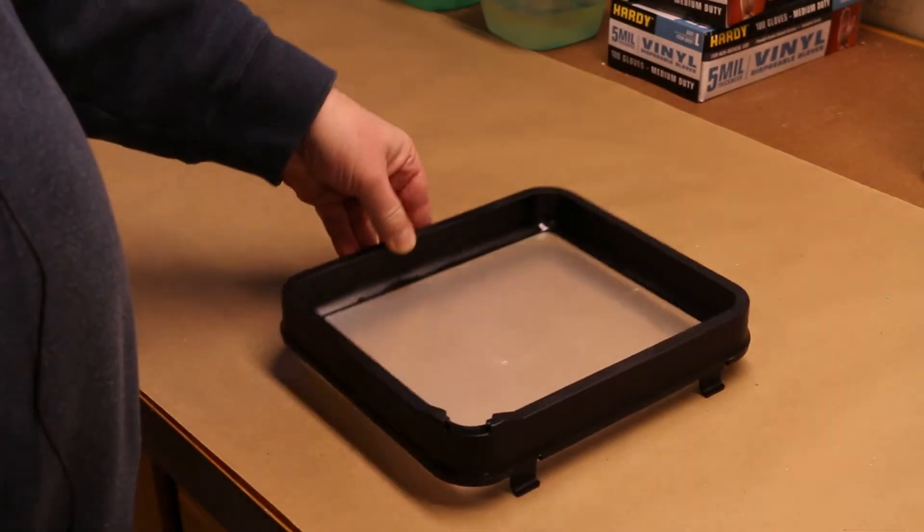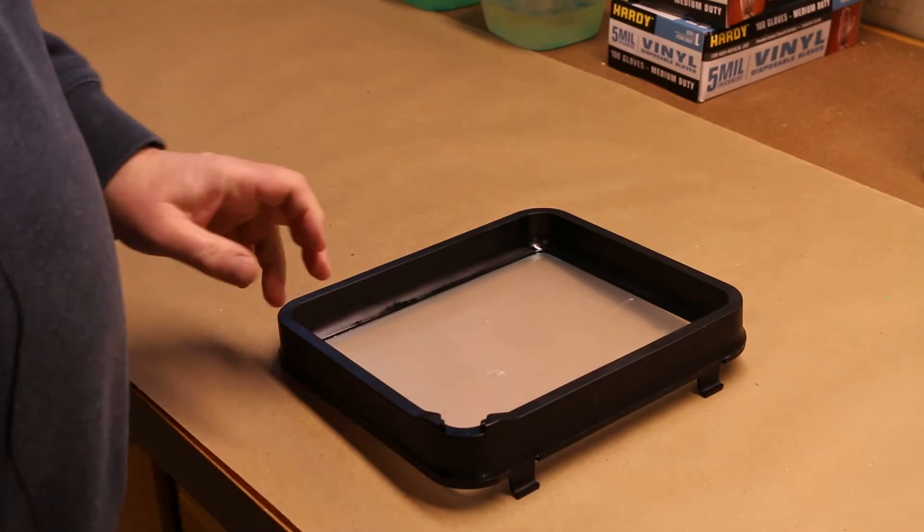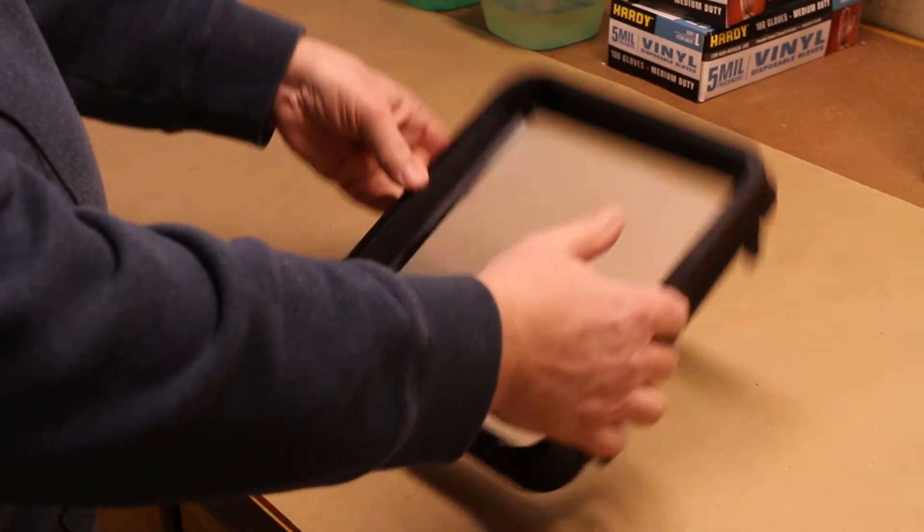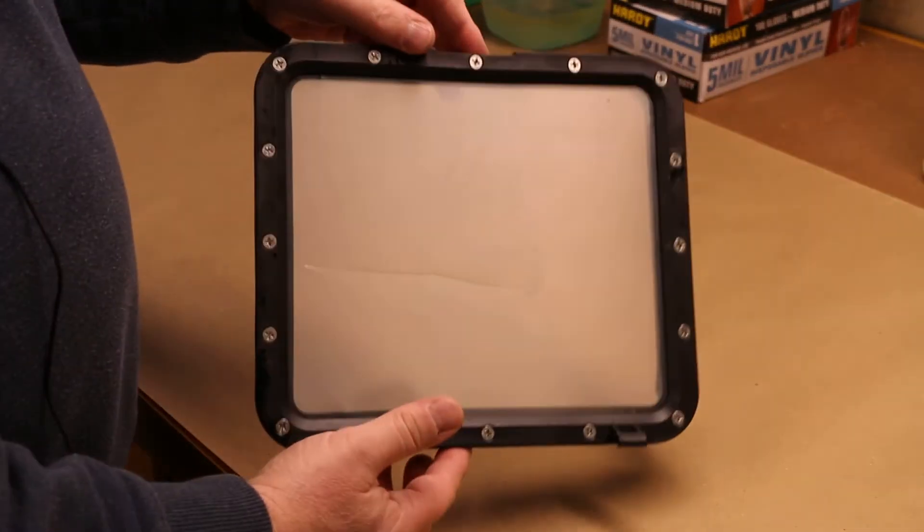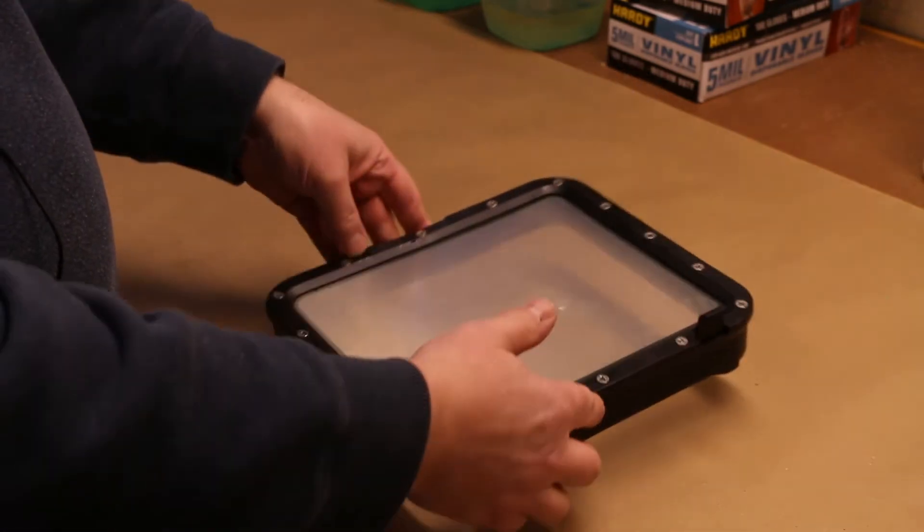The first step is to remove all the resin from the vat. Next, you remove the bottom of the vat. In this case, it's held on by 16 Phillips-head screws.